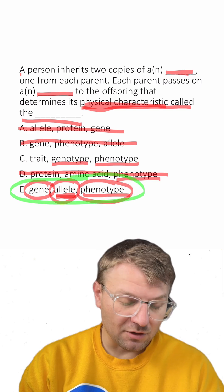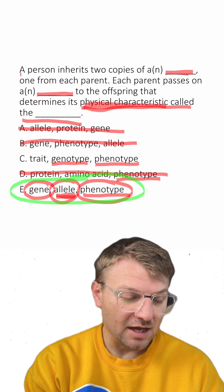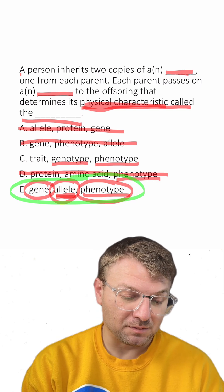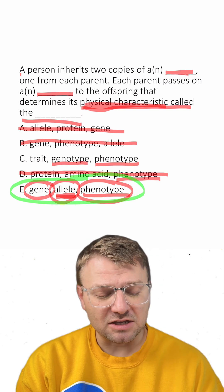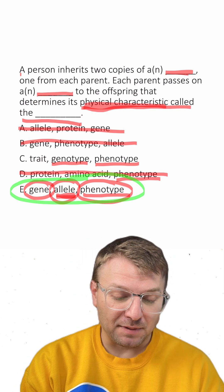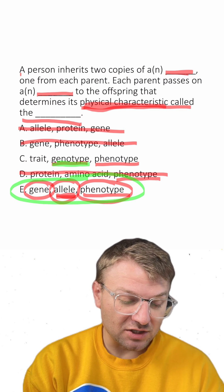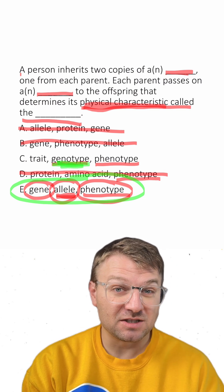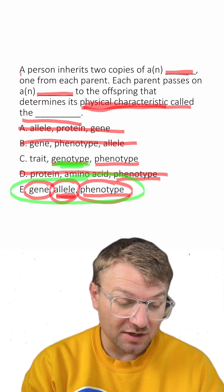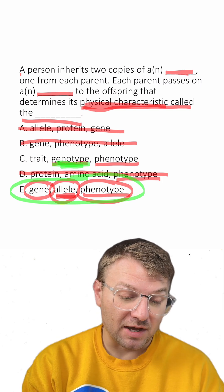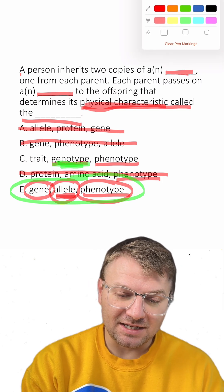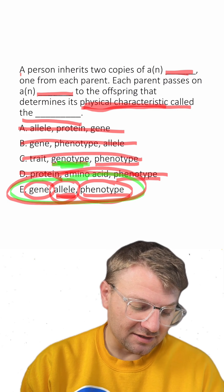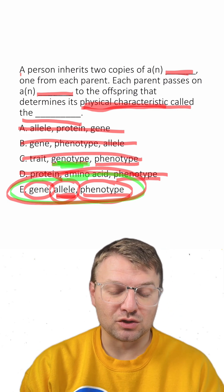This sounds like our answer. It's much better than C. A person inherits two copies of a trait, one from each parent — that's not bad — but each parent passes on a genotype. No, they're not passing on a genotype; they're passing on specific alleles that combine to form a genotype. So C is not the right answer. E is definitely the right choice.